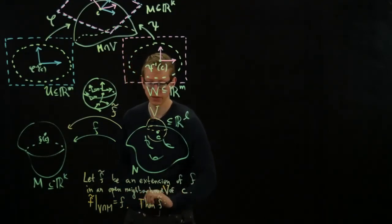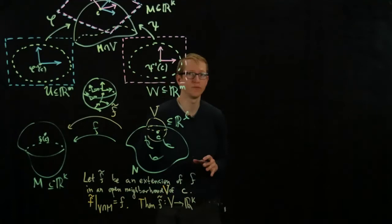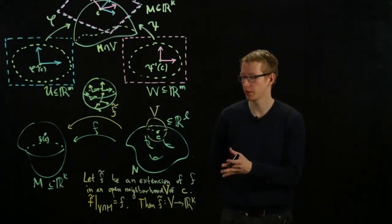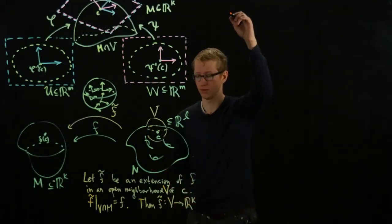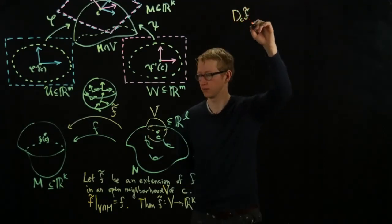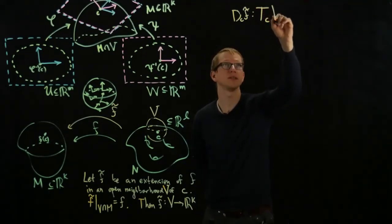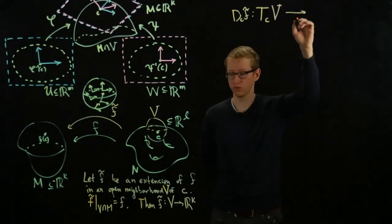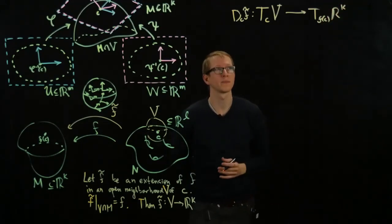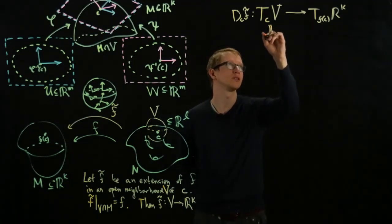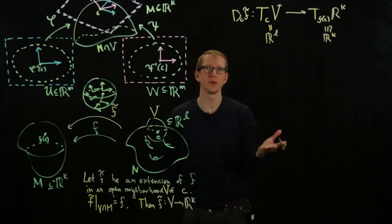Then F tilde defines a function from V to R^K. Now, V is an open subset of Euclidean space. R^K is a Euclidean space. We can take the differential of this function. So D_C F tilde exists, and it's a function from the tangent space at the point C in the open set V to the tangent space at the point FC in R^K. And this is something we're already familiar with. But previously, we perhaps called this just R^L, and this we just called R^K. And we could have used the basis here, and we would have gotten a Jacobian.